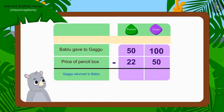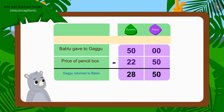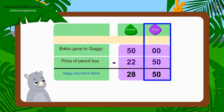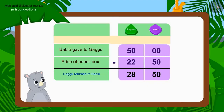And since we have borrowed 1 rupee, what do we have to do? Yes, we have to cut 50 rupees and write 49 rupees. Now, out of 100 paise, how much money is left after deducting 50 paise? 50 paise. If we look at the subtraction done by Gaggu, we will find that Gaggu also used the borrowing process like us, but he forgot to cut 50 rupees and write 49 rupees. Therefore, the amount returned by Gaggu to Bablu was wrong.